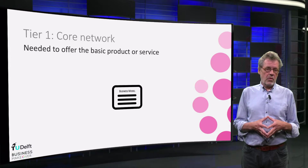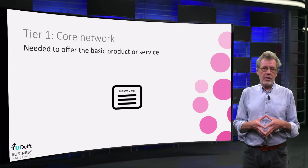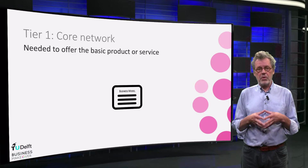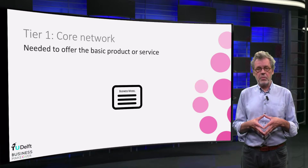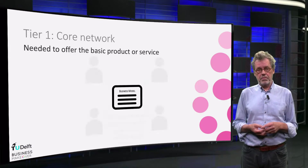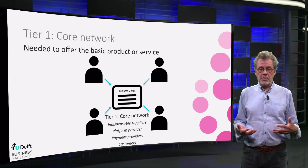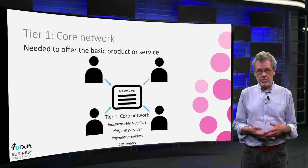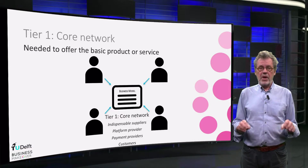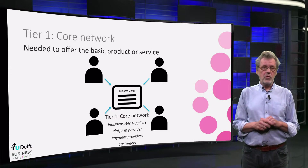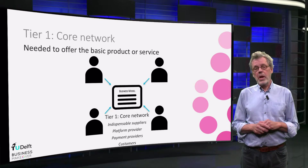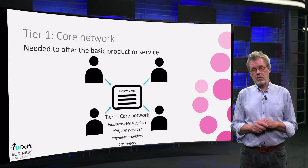As we discussed in the earlier video on value networks, there is a core network of actors that are needed to offer the basic product or services on which your value proposition is built. This is called the first tier of the ecosystem. If they don't participate, there is no product or service, and the business model cannot be realized. They provide essential and non-substitutable assets to the value network. Be aware that customer groups are also part of this first tier.